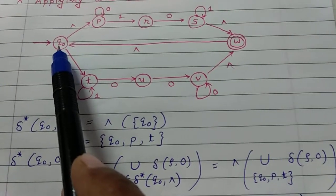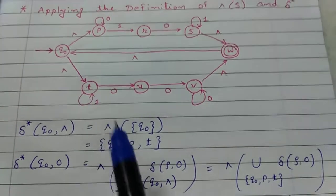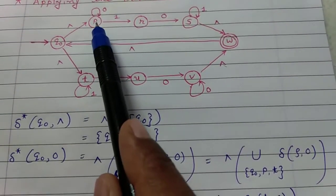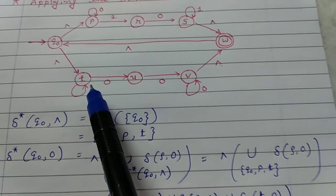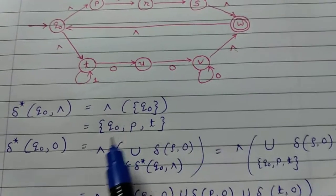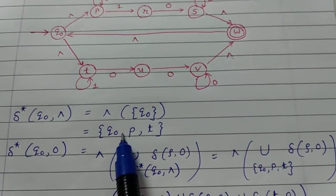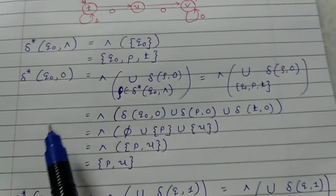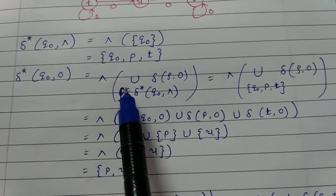Find the epsilon closure of Q0: first Q0 itself, then from Q0 via epsilon you reach P, and from Q0 via epsilon you also reach T. So epsilon closure of Q0 is {Q0, P, T}.